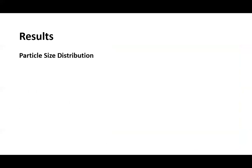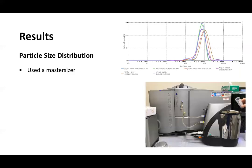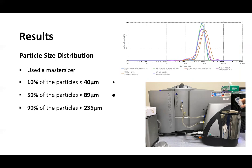Particle size distribution: A master sizer was used. The graph above indicates the distribution of particle sizes across six formulations. 10% of the particles were less than 40 micron. 50% were less than 89 micron. And 90% were less than 236 micron. Just for scale, one millimeter, which is a thousand microns, looks like this.